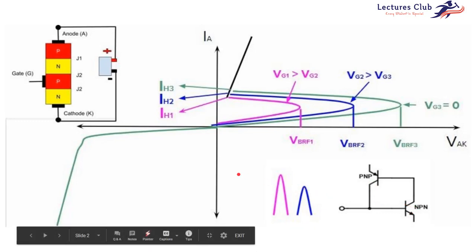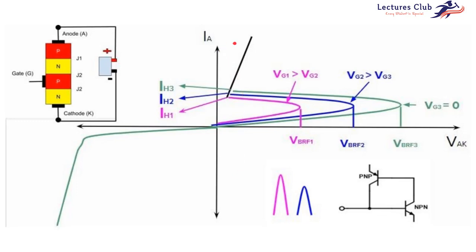So if we want to turn off SCR, we need to bring the anode current of SCR below the holding current. Holding current is the minimum threshold current in the forward conduction region, below which the SCR transitions from the forward conduction region back to the forward blocking region. So in every method — method A, method B, method C, method D — whatever circuit you use to turn off an SCR, eventually what you are doing is bringing down the anode current below the holding current, otherwise the SCR will not be turned off. In this lecture, we will talk about the two most basic methods to turn off SCR.